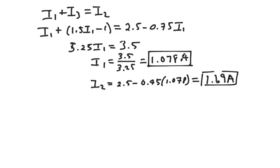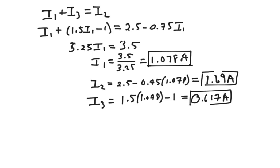And my I3 is equal to 1.5 times I1, 1.078 minus 1. And what does that give me? It gives me 0.617 amps. Those are my three currents.